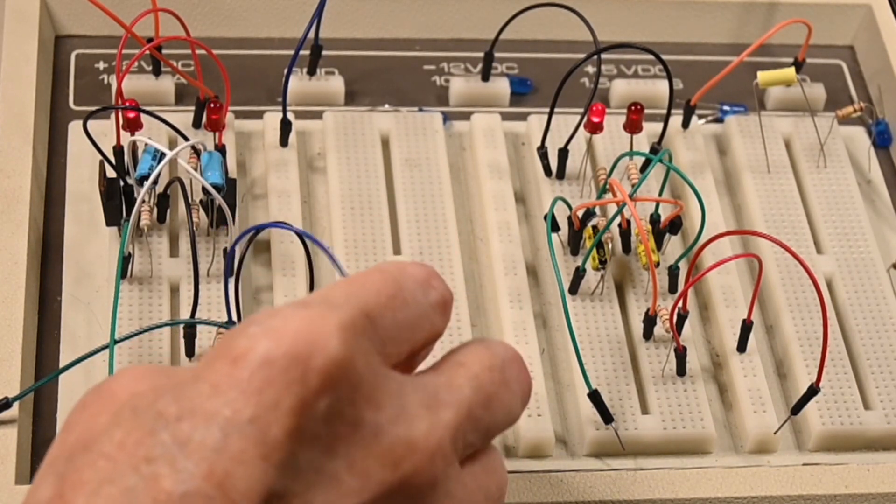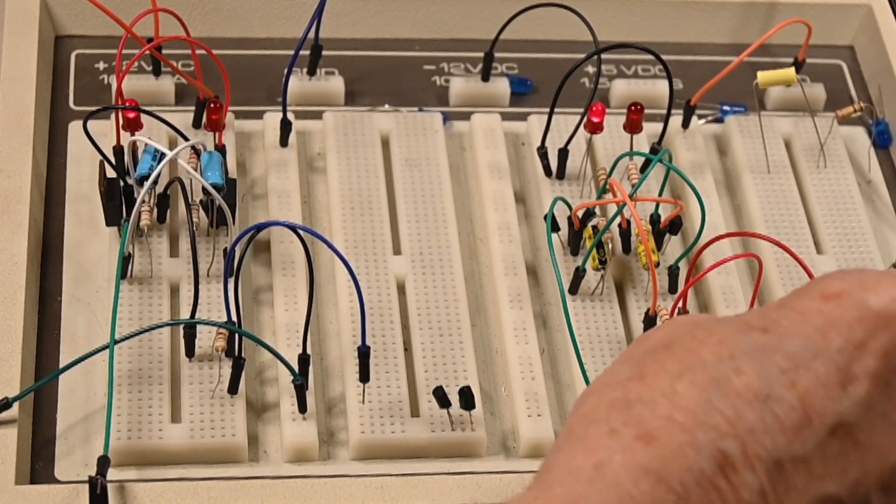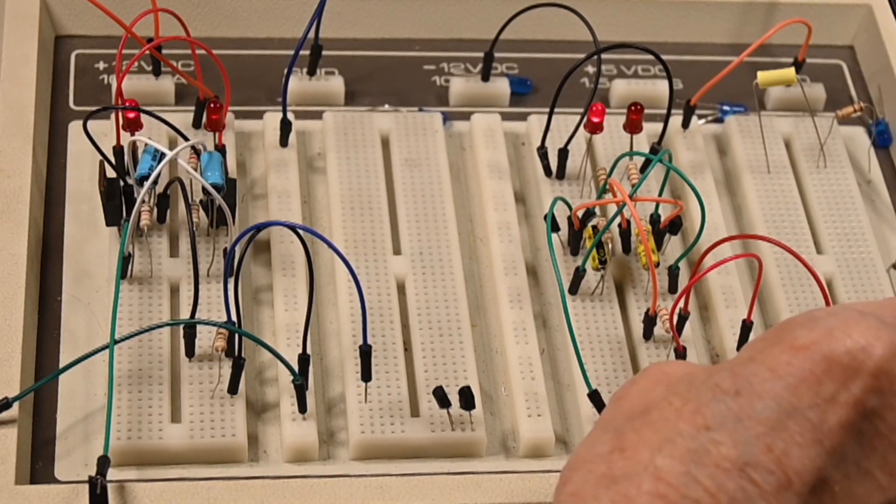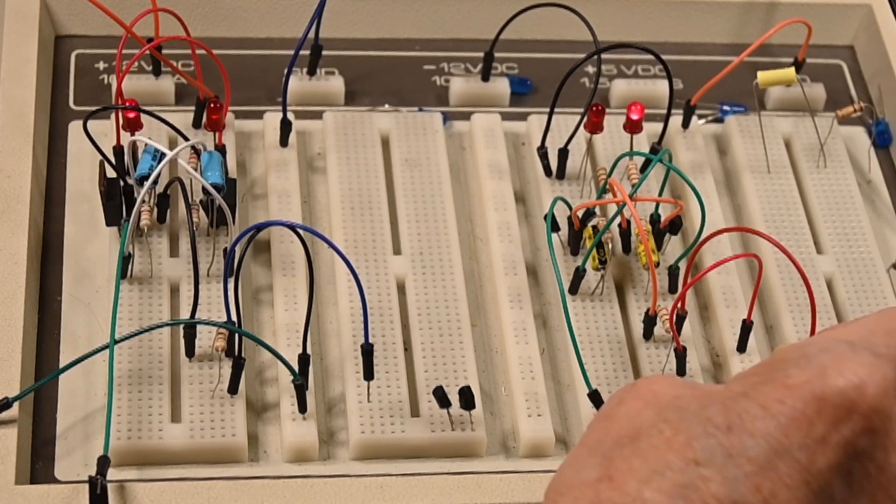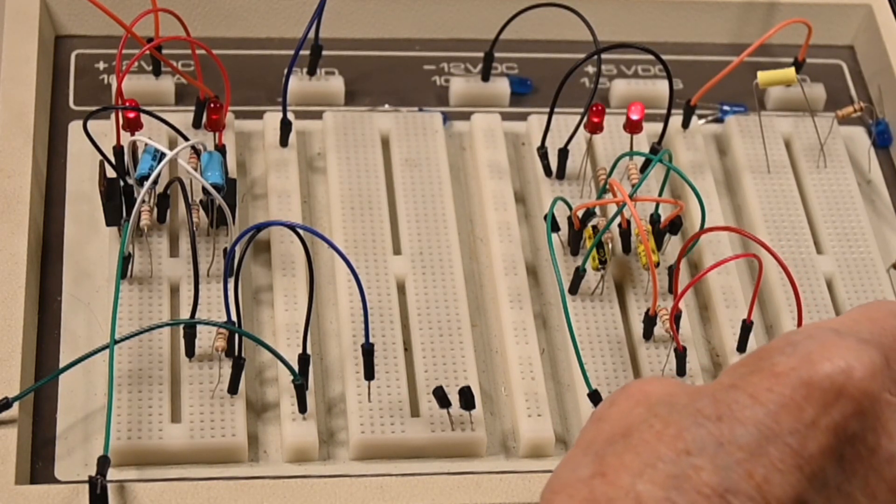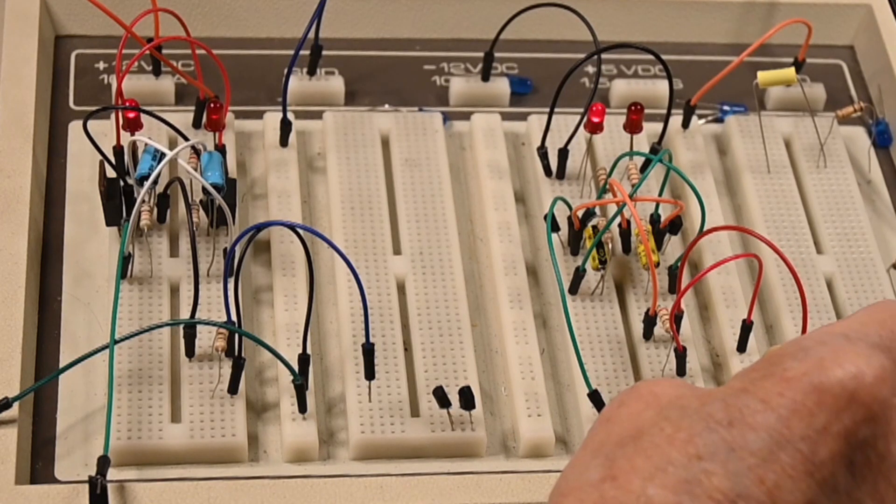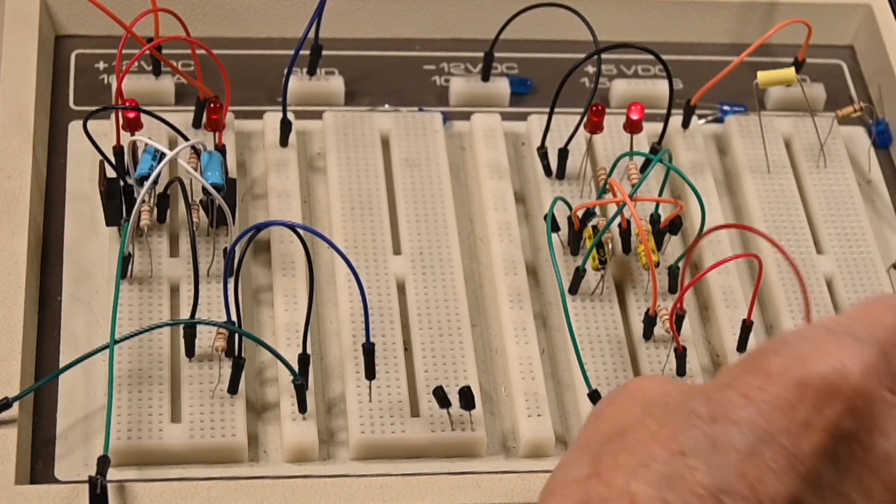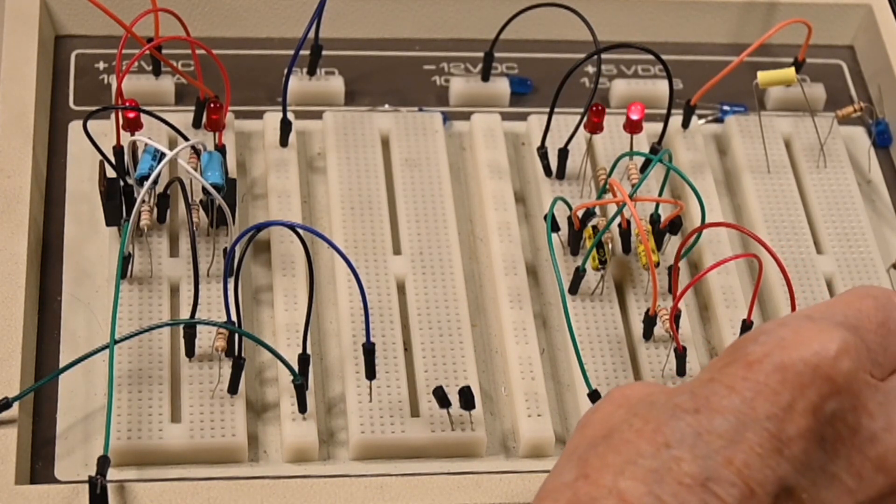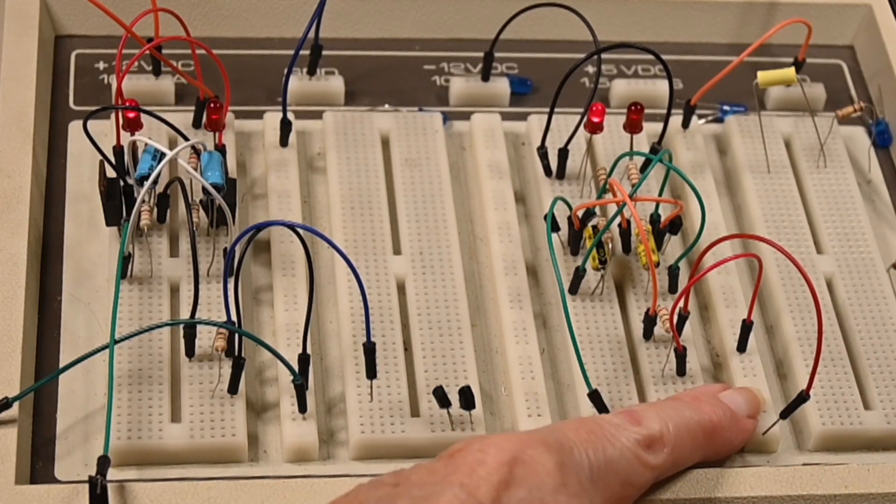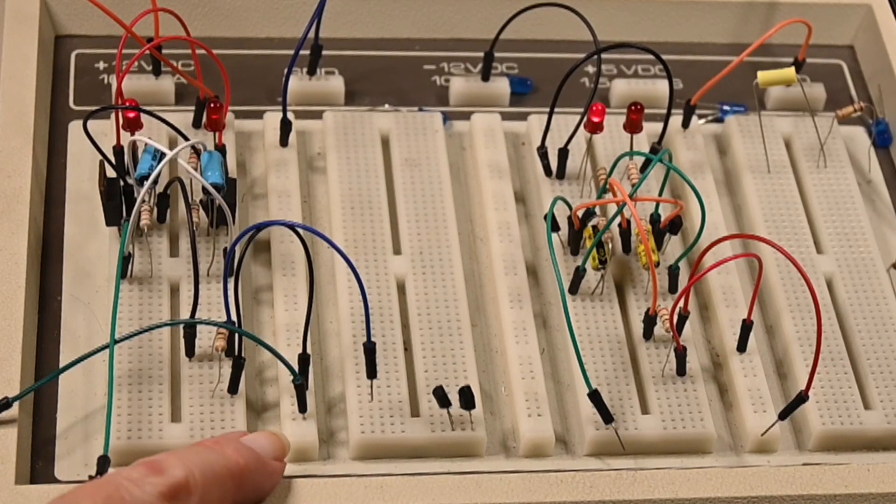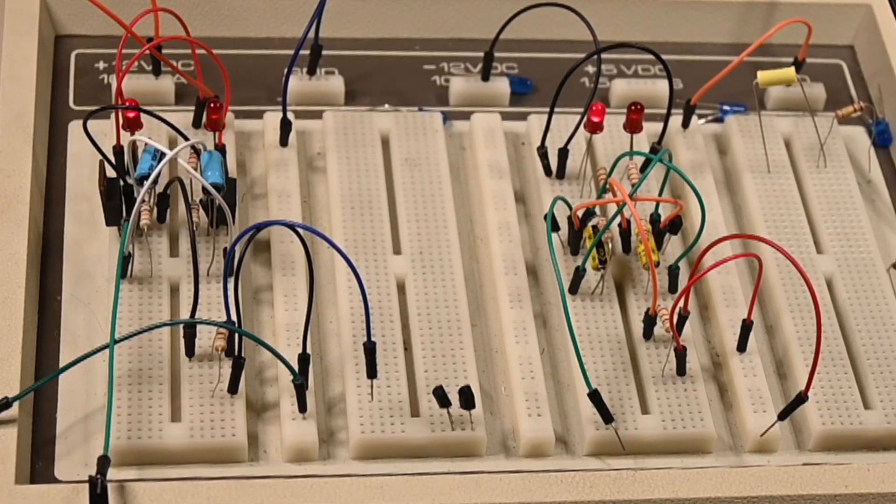Here's the PNP with positive ground. Same operation. The difference is this is a positive ground and the NPN is a negative ground.